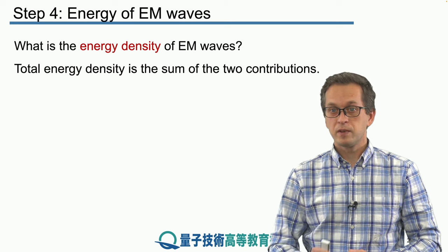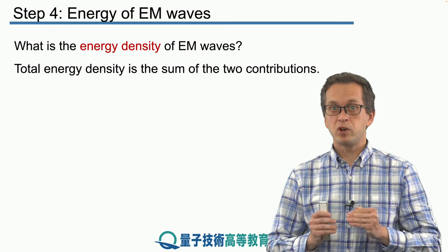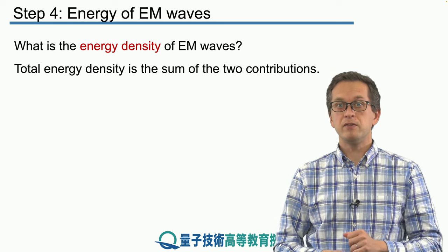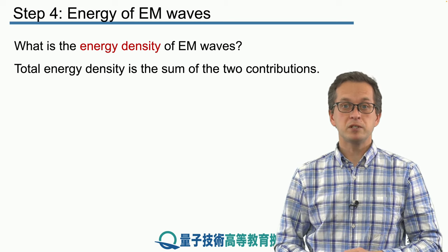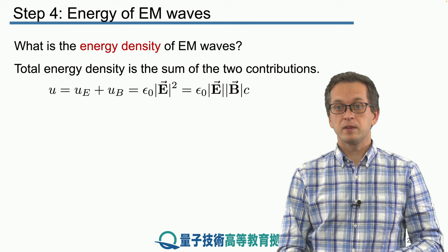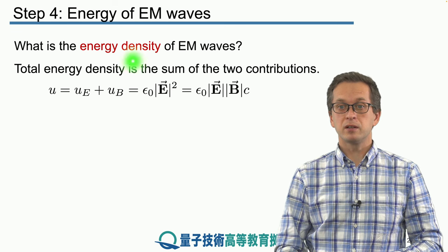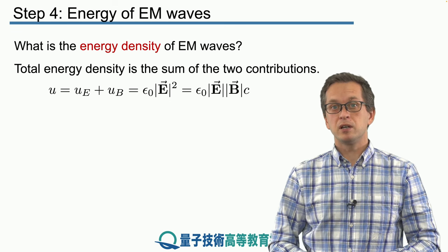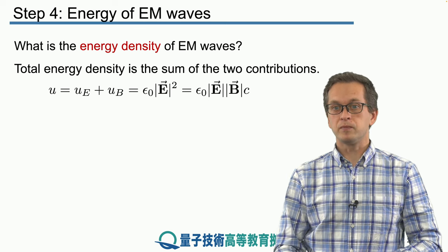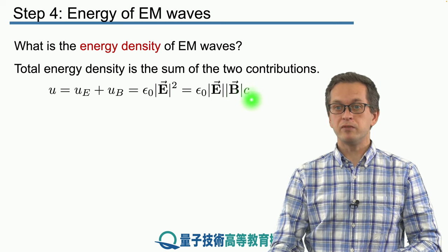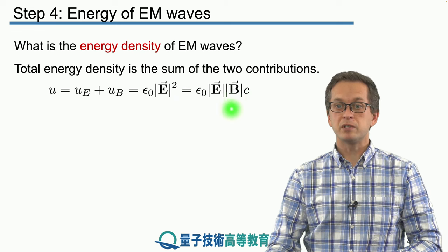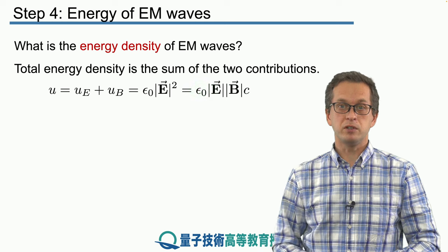The total energy density of a propagating electromagnetic wave, which is composed of oscillating E field and B field, is then given simply as the sum of u_E and u_B. It equals epsilon naught times the magnitude of the electric field squared. Or, if you want to express it in terms of the B field, we substitute B times c for one of the magnitudes of the E field.